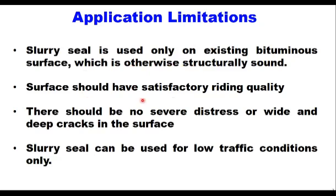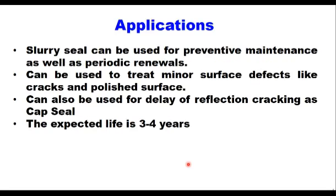The surface should have satisfactory riding quality. There should be no severe distress or wide and deep cracks in the surface. Slurry seal can be used for low traffic conditions only — for preventive maintenance as well as periodic renewals. It can also be used to treat minor surface defects like fine cracks and polished surface, and for delay of reflection cracking as cap seal. The expected life of a slurry seal layer is 3 to 4 years.